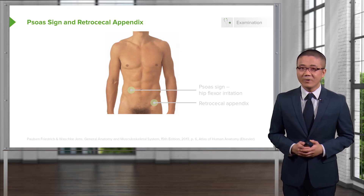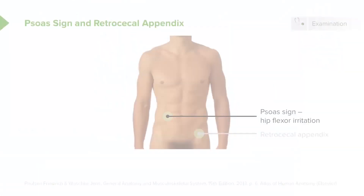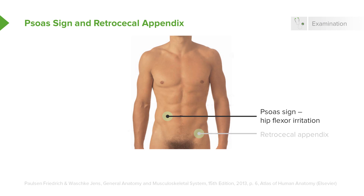Some other signs you should be aware of for the examination. The psoas sign — how do I elicit the psoas sign? I ask the patient to lie flat on their bed and flex their knee and their hip. This stretches the psoas muscle, and if there's pain elicited, it's indicative of what's called a retrocecal appendix — retro meaning behind the cecum, the very beginning of the right colon. The retrocecal appendix is not only important for diagnosis of appendicitis but also important in surgical planning, as it may make the surgery a little bit more challenging.